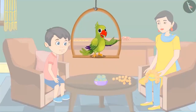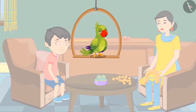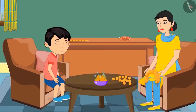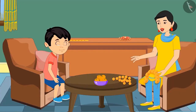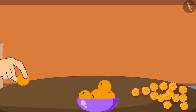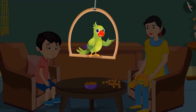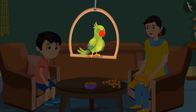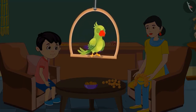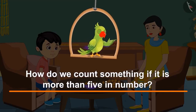The mother says: Very good Chotu, you can eat two out of these five laddoos — one and two. So children, like Chotu, you also know numbers from one to five. Let us now see how we count something if it is more than five in number.